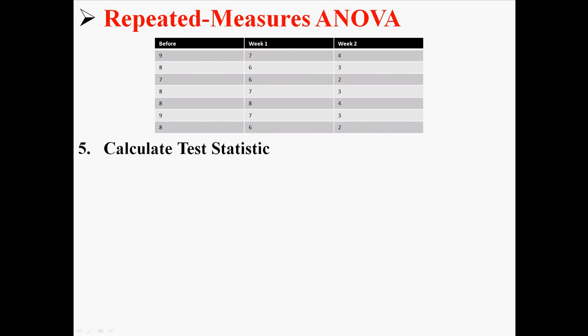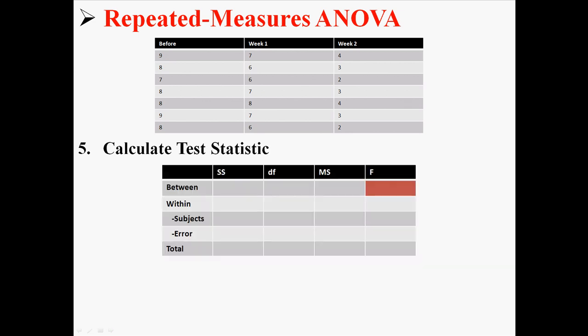Next, we're actually going to calculate the F. We're going to calculate the test statistic. So let me organize things in this table here. We're going to need to fill out this table with the goal of finding F. Note that this looks like a one-way ANOVA table. It still has between, within, and total.